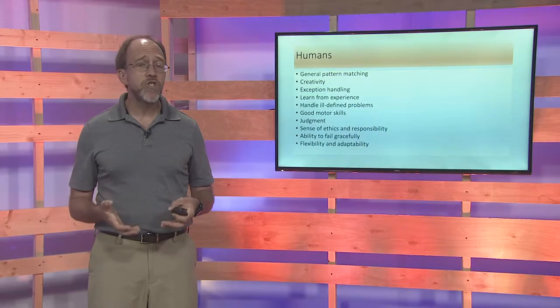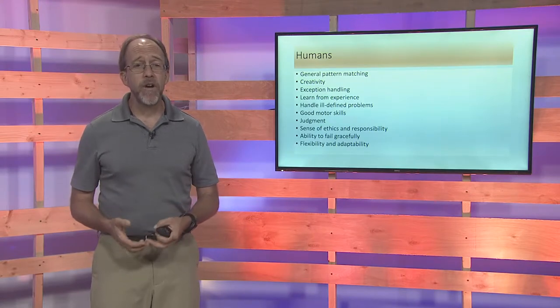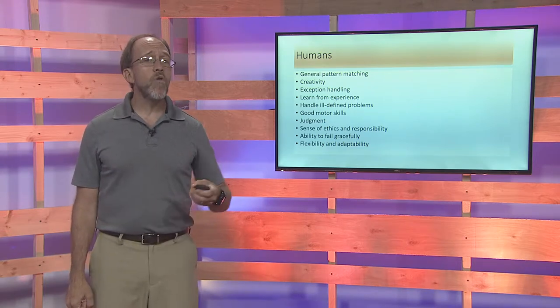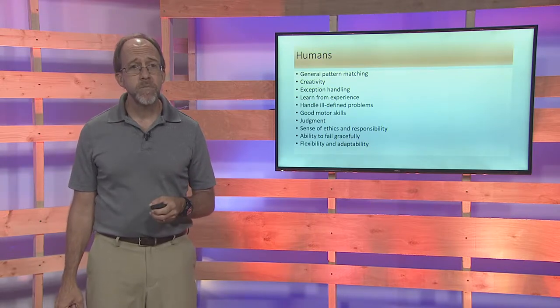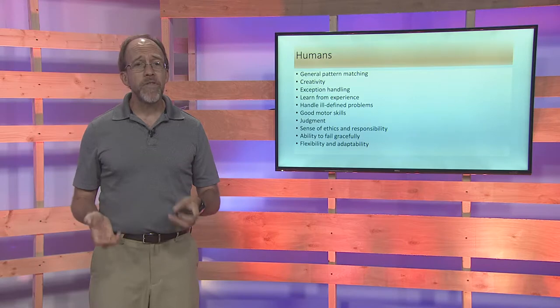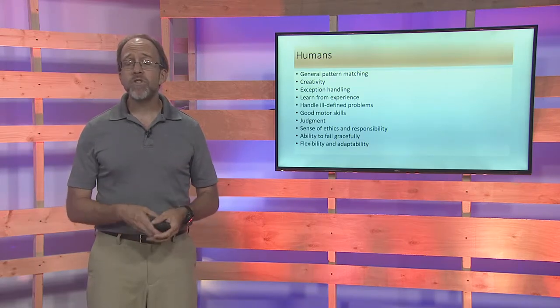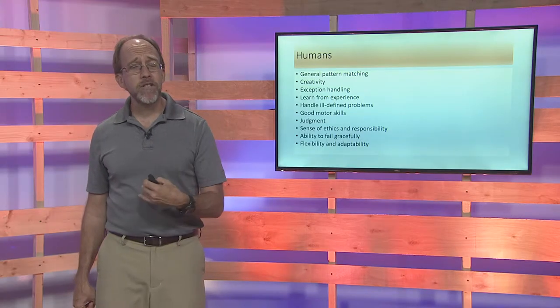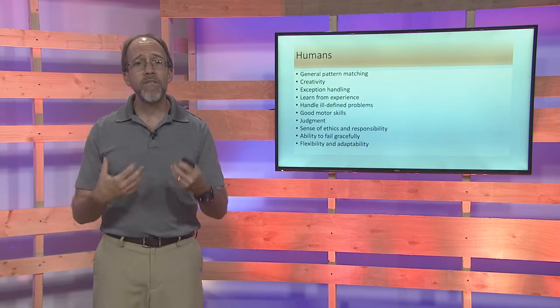Humans also have the ability to learn. Even though there's a field of machine learning, machines don't learn like humans do. Humans can take a failure, analyze it, and develop systems that get past that next set of failures — which is why over time we've developed extremely reliable engineered systems. You go out, start your car, and it works almost 100% of the time, whereas older cars were quite unreliable. We've learned from past engineering failures and figured out better ways.